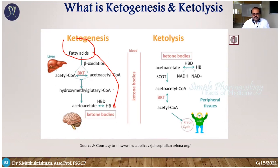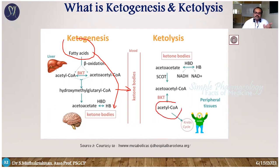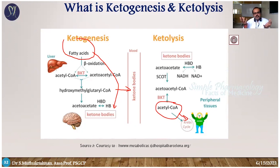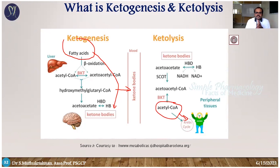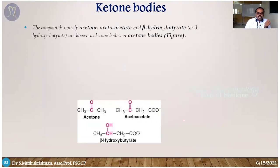Ketone bodies are energy-yielding substances. Once formed, they enter systemic circulation and are carried to various places where energy is needed. At those sites, the ketone bodies are degraded to produce energy and regenerate acetyl-CoA, which enters the TCA cycle to produce energy for peripheral tissue. Overall: excess acetyl-CoA is converted into ketone bodies, which travel through the bloodstream and upon reaching peripheral tissue or brain, are degraded back to acetyl-CoA for energy via the TCA cycle.